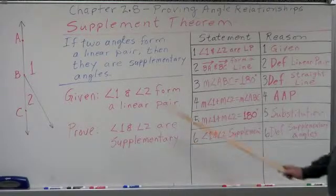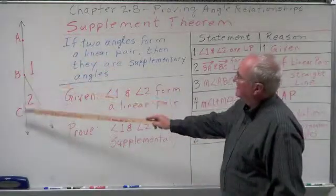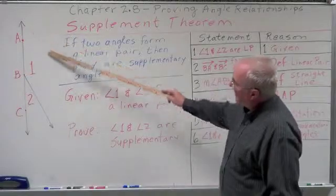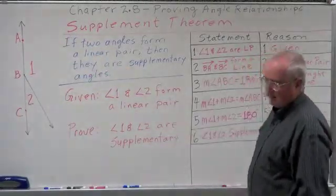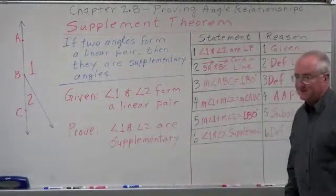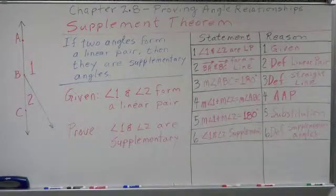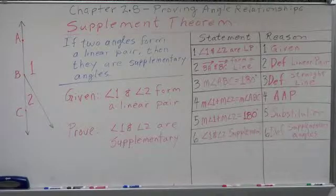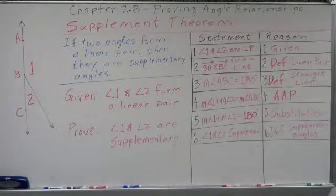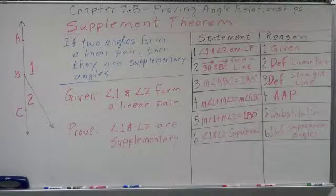Notice that we have points A, B, and C. If we make that into an angle, we have angle ABC. Now, angle ABC — what type of angle is it? It makes a straight line, so therefore it is a straight angle. What is the measurement of a straight angle? 180 degrees.